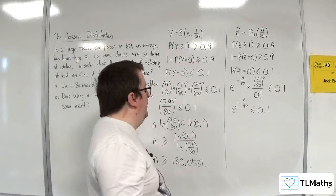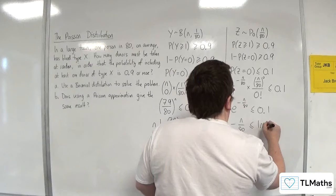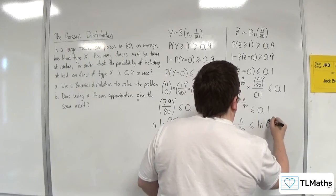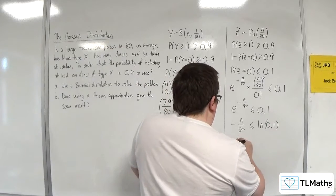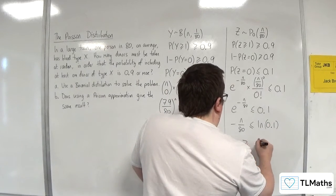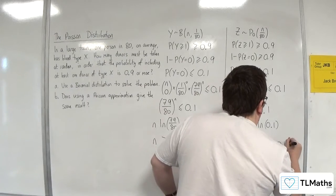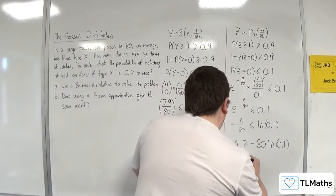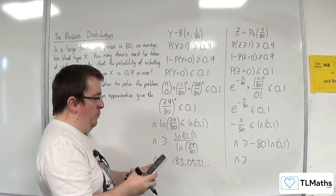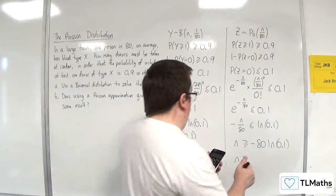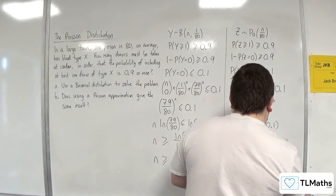Now take natural logs of both sides. So minus N over 80 has got to be less than or equal to the natural log of 0.1. Multiply through by minus 80. So N has got to be greater than or equal to minus 80 times the natural log of 0.1. So minus 80 times the natural log of 0.1, and I get 184.2068, etc.